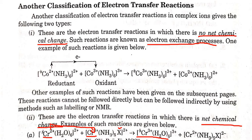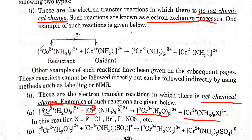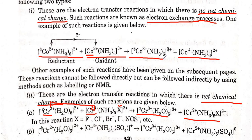In some electron transfer reactions, the net chemical change is zero — these are known as electron exchange processes. For example, the reductant is hexamminecobalt(II) ion and the oxidant is hexamminecobalt(III) ion. After electron transfer, cobalt(+2) becomes cobalt(+3) and cobalt(+3) becomes cobalt(+2). The actual reactants and products are not changed — the net chemical change is zero — but there is an electron transfer between the two complexes.